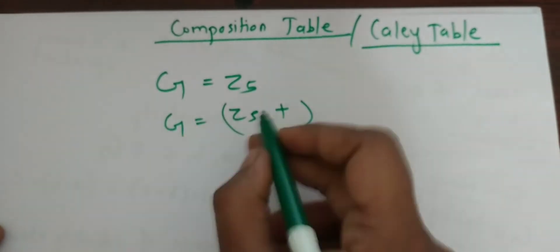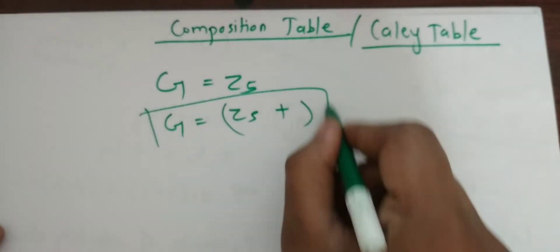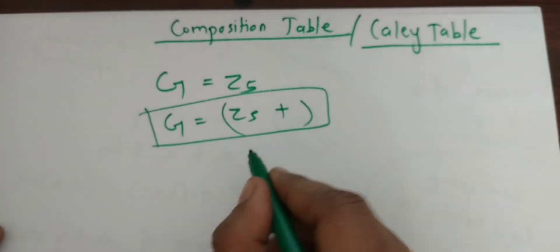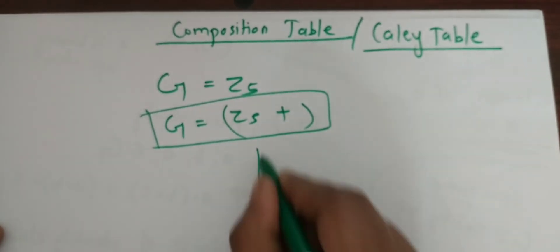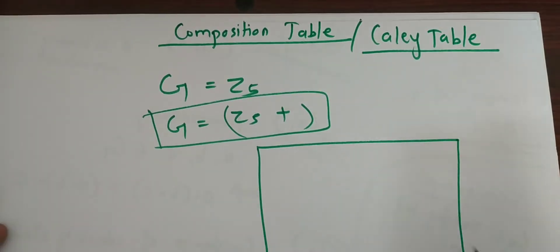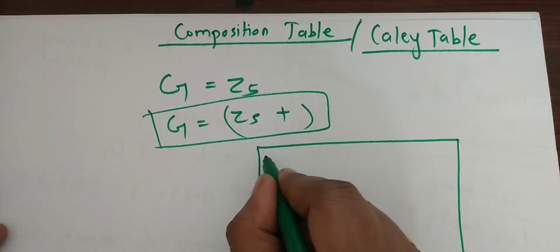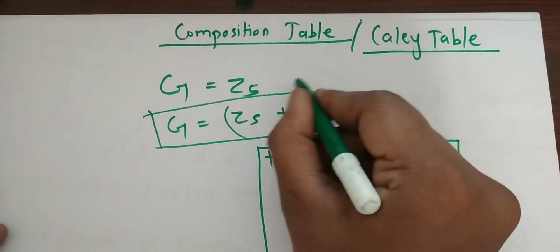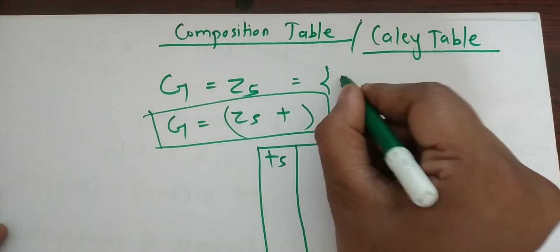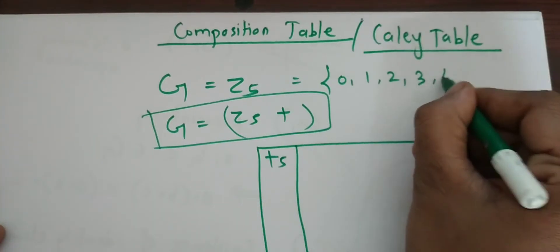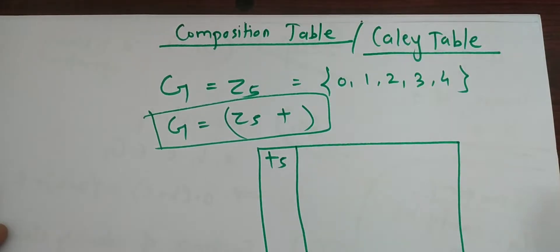So we can write like this, under addition. How many elements are contained in Z5? We know: 0, 1, 2, 3, 4 — 5 elements are contained in Z5.